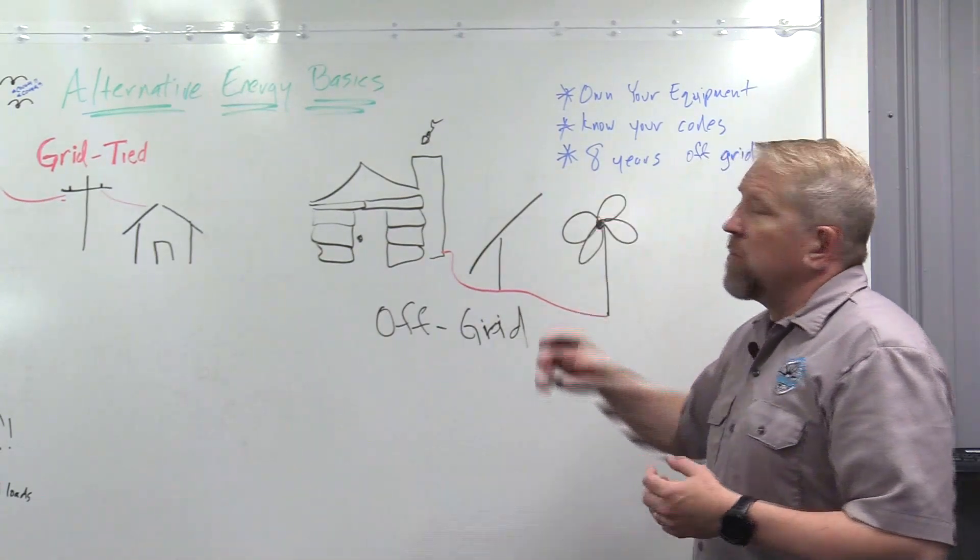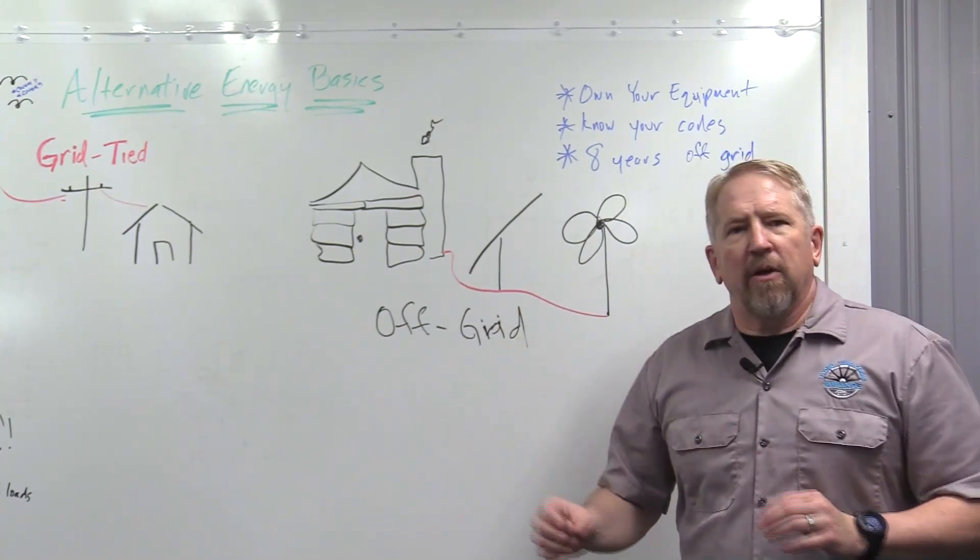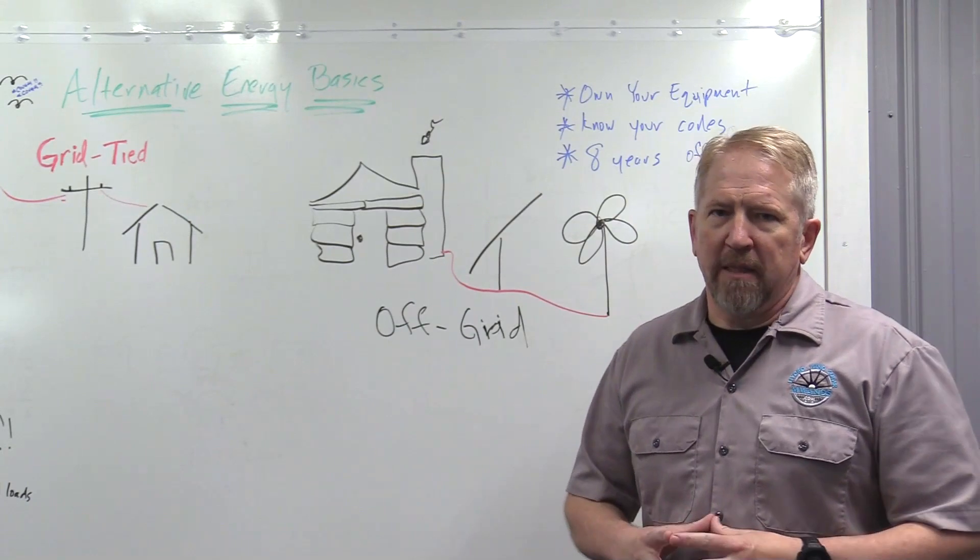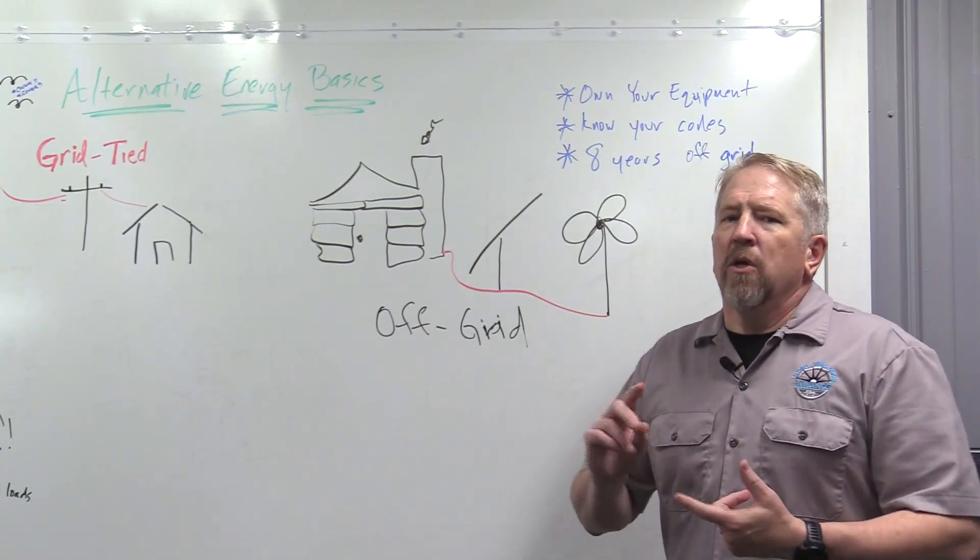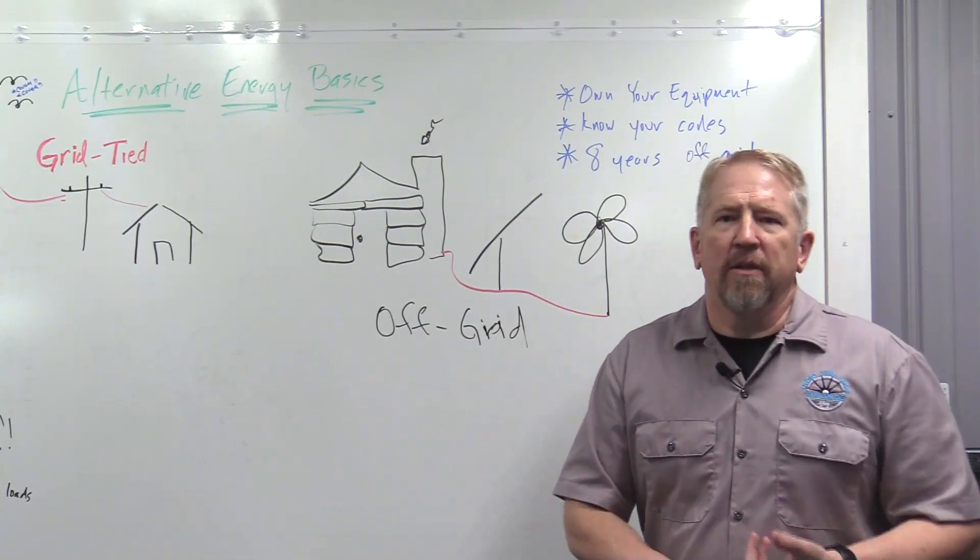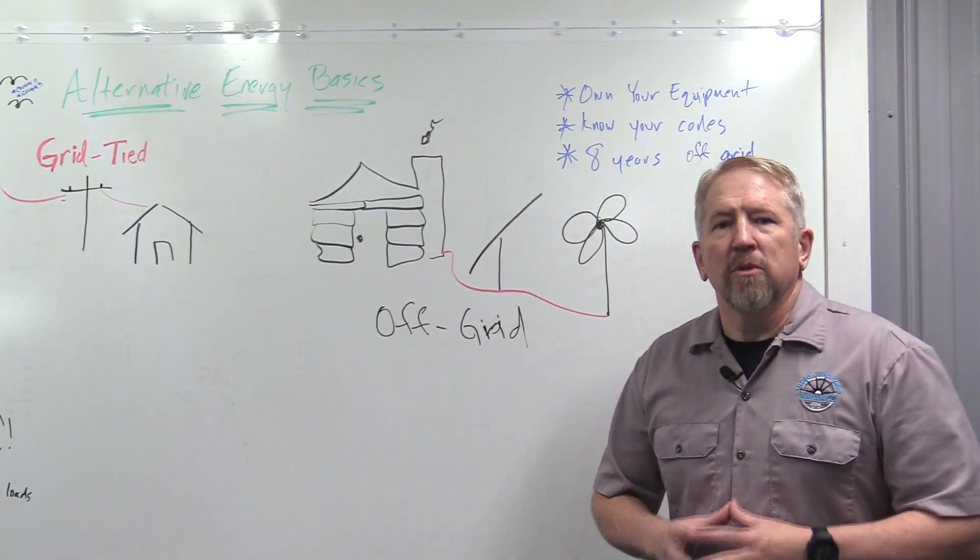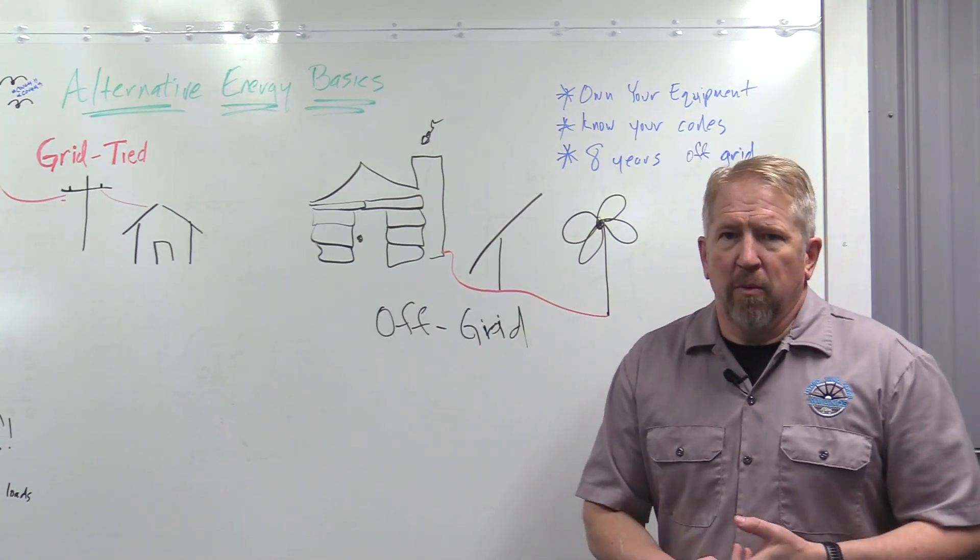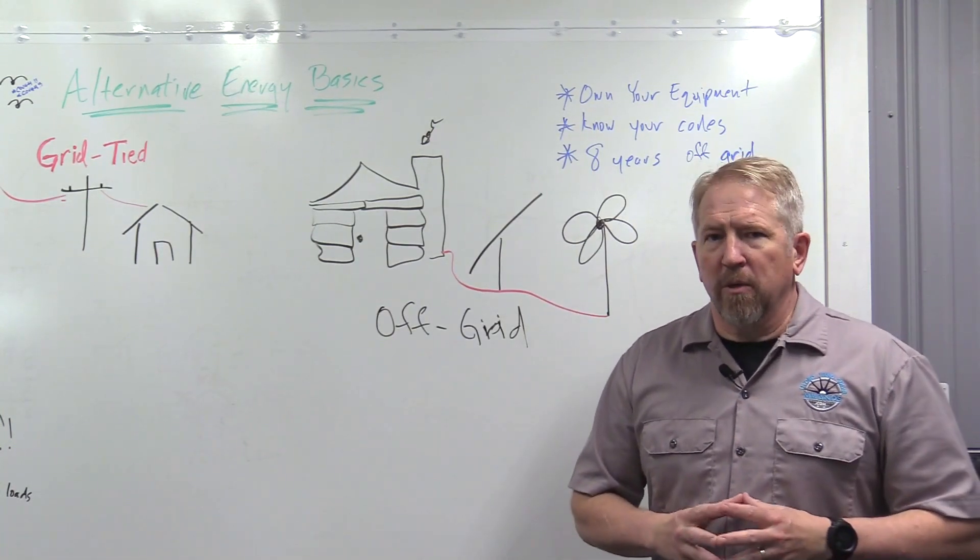The other thing you want to do is know your local codes. We can talk about anything you want and how to configure this. It doesn't matter if your local codes don't permit this. Even though we're gonna sell you stuff that's UL listed and all these good things, you still may not be permissible under your codes. So know your codes that you're dealing with. You also need to know what your power company will allow you to do. So be sure and do your research before you make your first purchase.